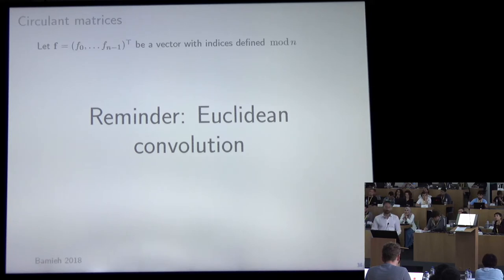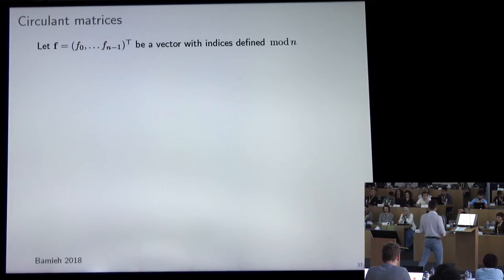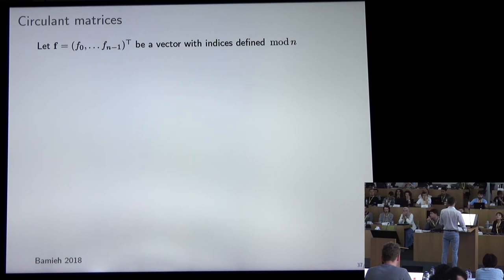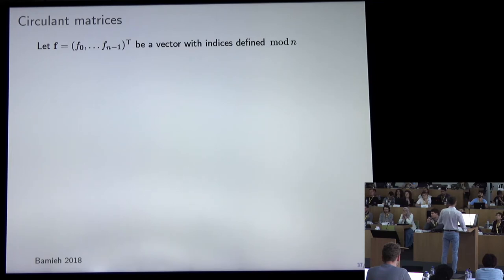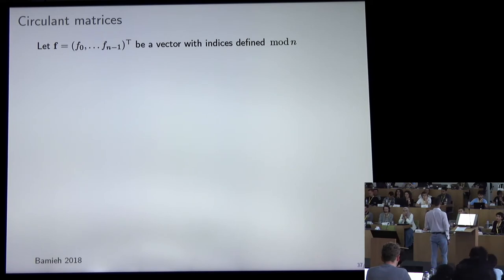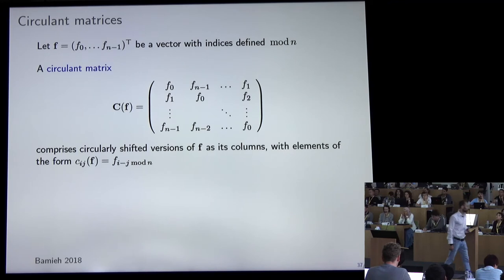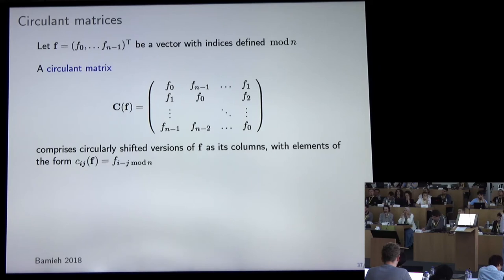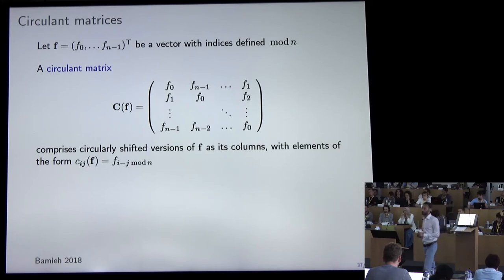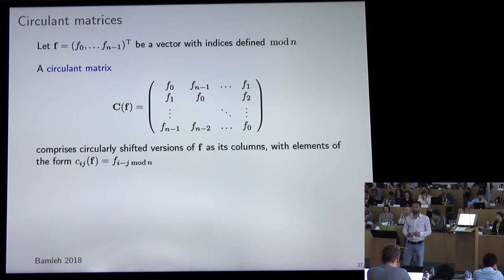In signal processing this is sometimes called shift invariance, but the correct term is shift equivariance: the result changes in the same way as the shift operator. Two matrices are jointly diagonalizable if and only if they commute. Therefore, a convolutional operation should be diagonalized by eigenvectors of the shift operator. The eigenvectors of the shift matrix are the discrete Fourier transform (DFT), which in the Euclidean case can be computed efficiently in N log N using the FFT algorithm.